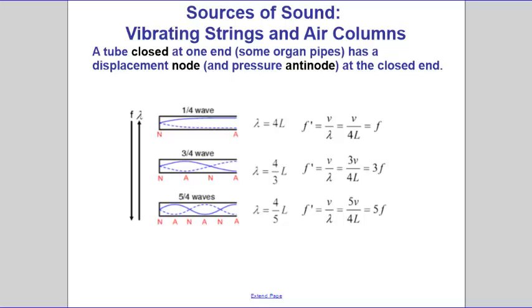A tube closed at one end, like some organ pipes, has a displacement node and a pressure antinode at the closed end.